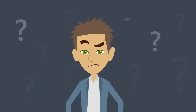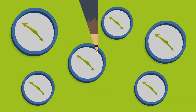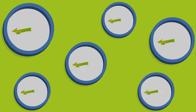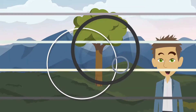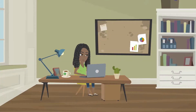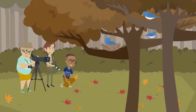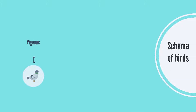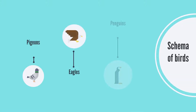Your schemas aren't fixed. They change over time as you learn new things. For example, as a kid, you might have a simple bird schema — anything that flies and has feathers. But as you grow up and learn more, your bird schema might become more complex. You'd start to know the difference between different kinds of birds like pigeons, eagles, or penguins.